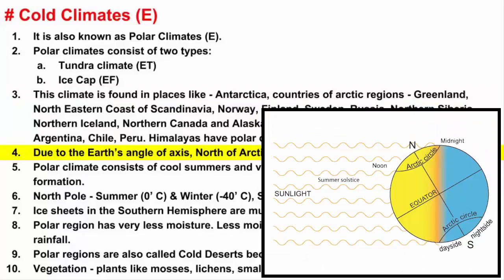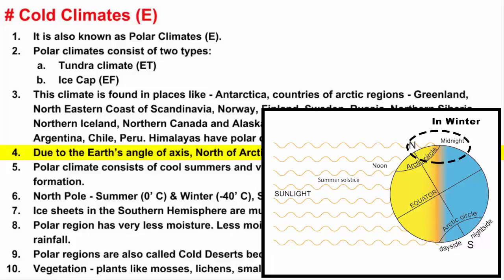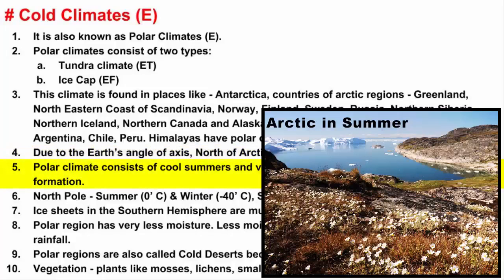If you look at this image, sunlight reaches the earth in this way. The rays have much further to travel to reach the polar regions, and the angle of the earth's axis also matters. The area north of the Arctic Circle experiences polar night in winter, meaning the further north you travel, the longer the polar night lasts.